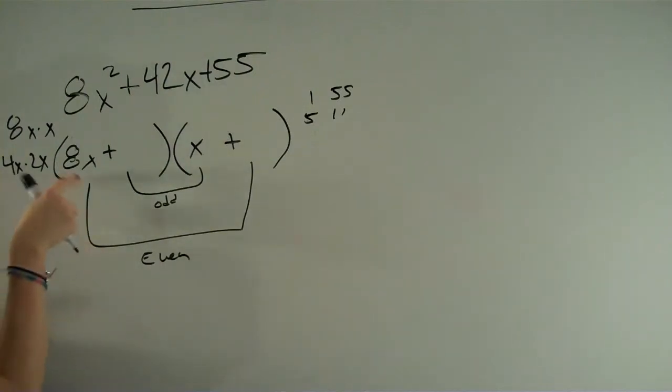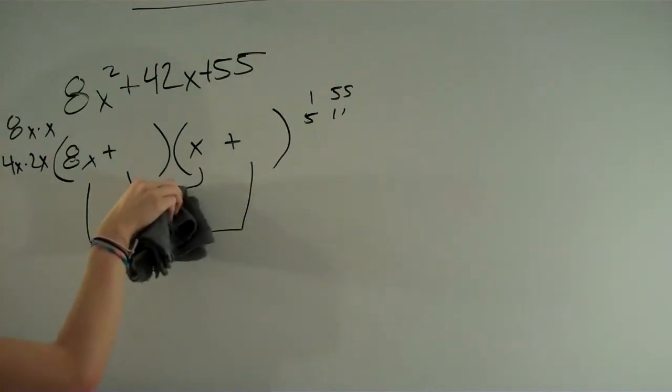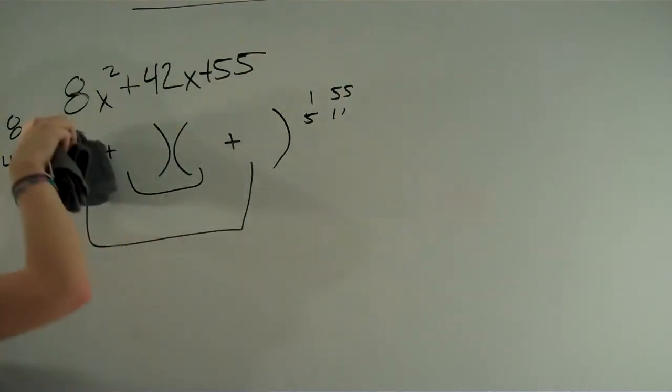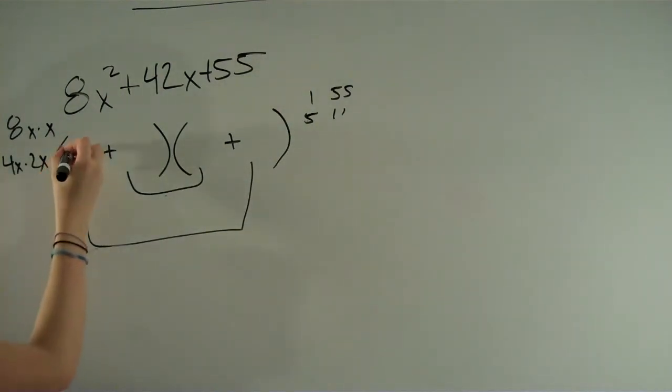So you know it can't be 8x times x because this is an even number in the middle. So you have to have 4x times 2x. And then we'll go from there.